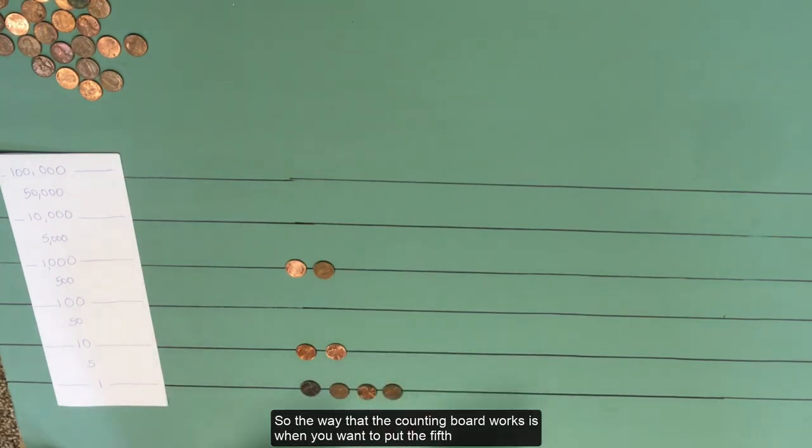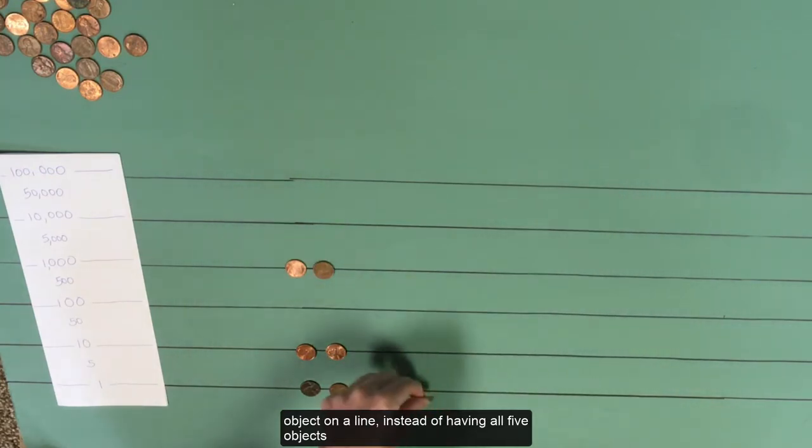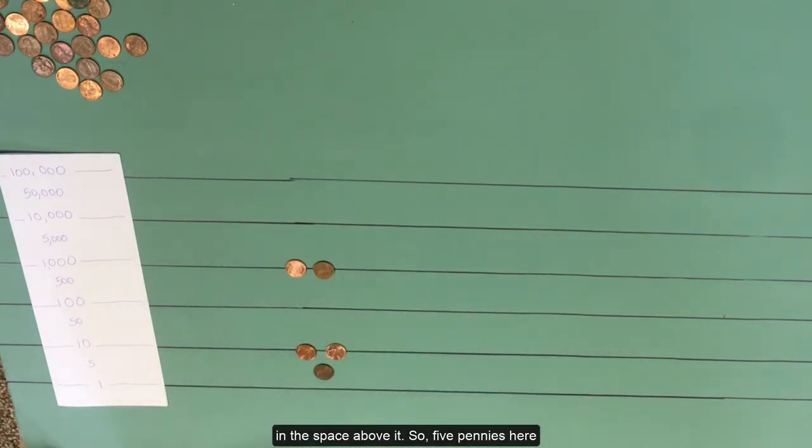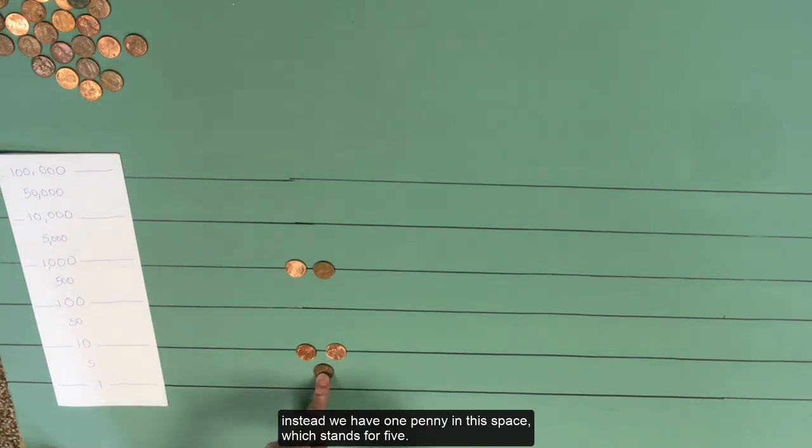So the way that a counting board works is when you want to put the 5th object on a line, instead of having all 5 objects on the line, you take them off and you put a single one in the space above it. So 5 pennies here, instead we have 1 penny in this space which stands for 5.